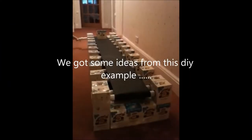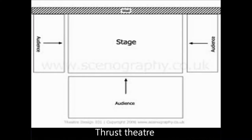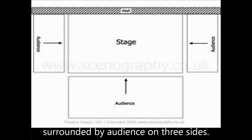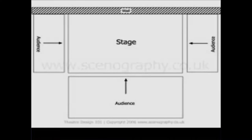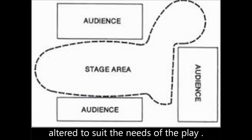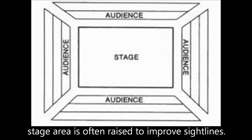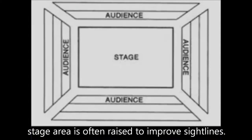We got some ideas from this DIY example from YouTube. Different types of stages: Thrust Theatre — a stage surrounded by audience on 3 sides. Flexible Theatre — a stage where the stage itself and the seating are not fixed and can be arranged to suit the needs of the play. Arena Theatre — a central stage surrounding the audience on all sides. The stage area is often used to improve sightlines.